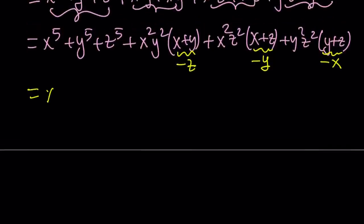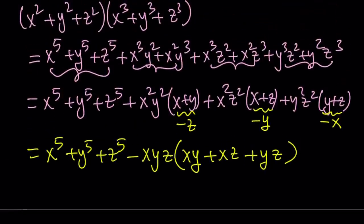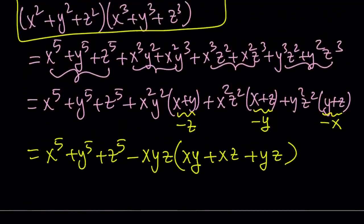So our expression becomes x to the fifth plus y to the fifth plus z to the fifth. Notice all the remaining terms are negative, so we can factor out negative xyz, leaving xy plus xz plus yz inside the parentheses. This is really nice and simple, and it's equal to the product of the sum of squares and the sum of cubes.